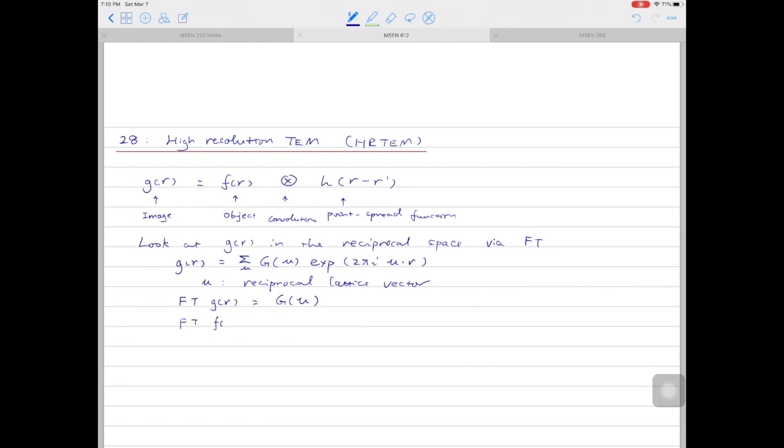Let's Fourier transform two more functions here. So Fourier transform f(r), the lowercase f, we'll get capital F(u). And Fourier transform small h(r) will get capital H(u).